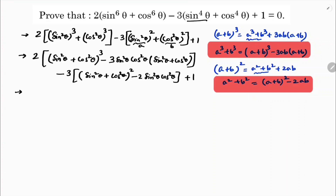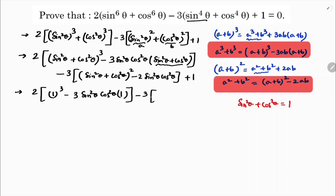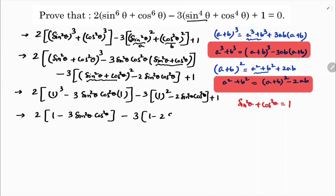I need to get the answer 0, so I will simplify. We know that sin square theta plus cos square theta equals 1. So here 1 cube minus 3ab into 1, minus 3ab into 1 minus 2 sin square cos square, plus 1.